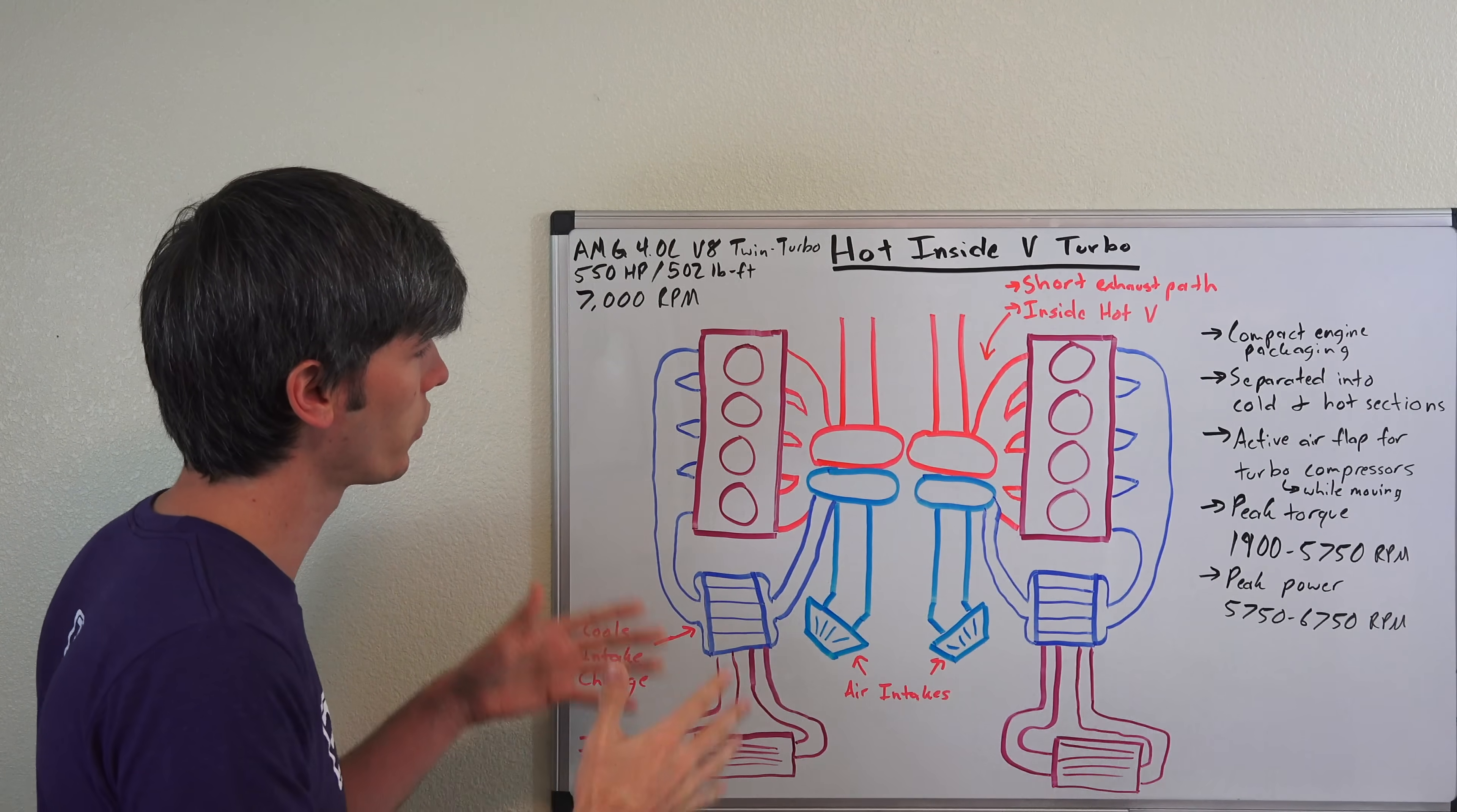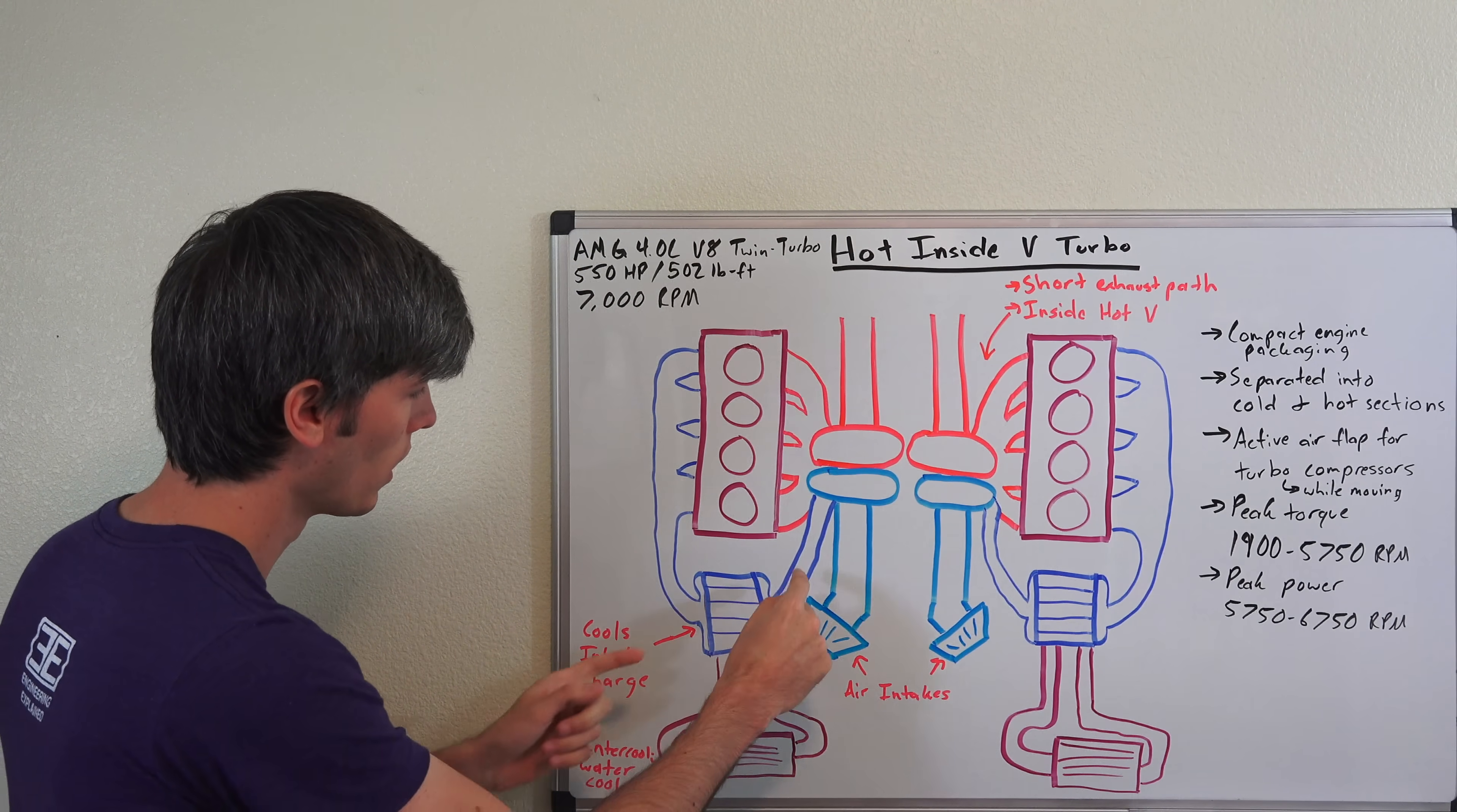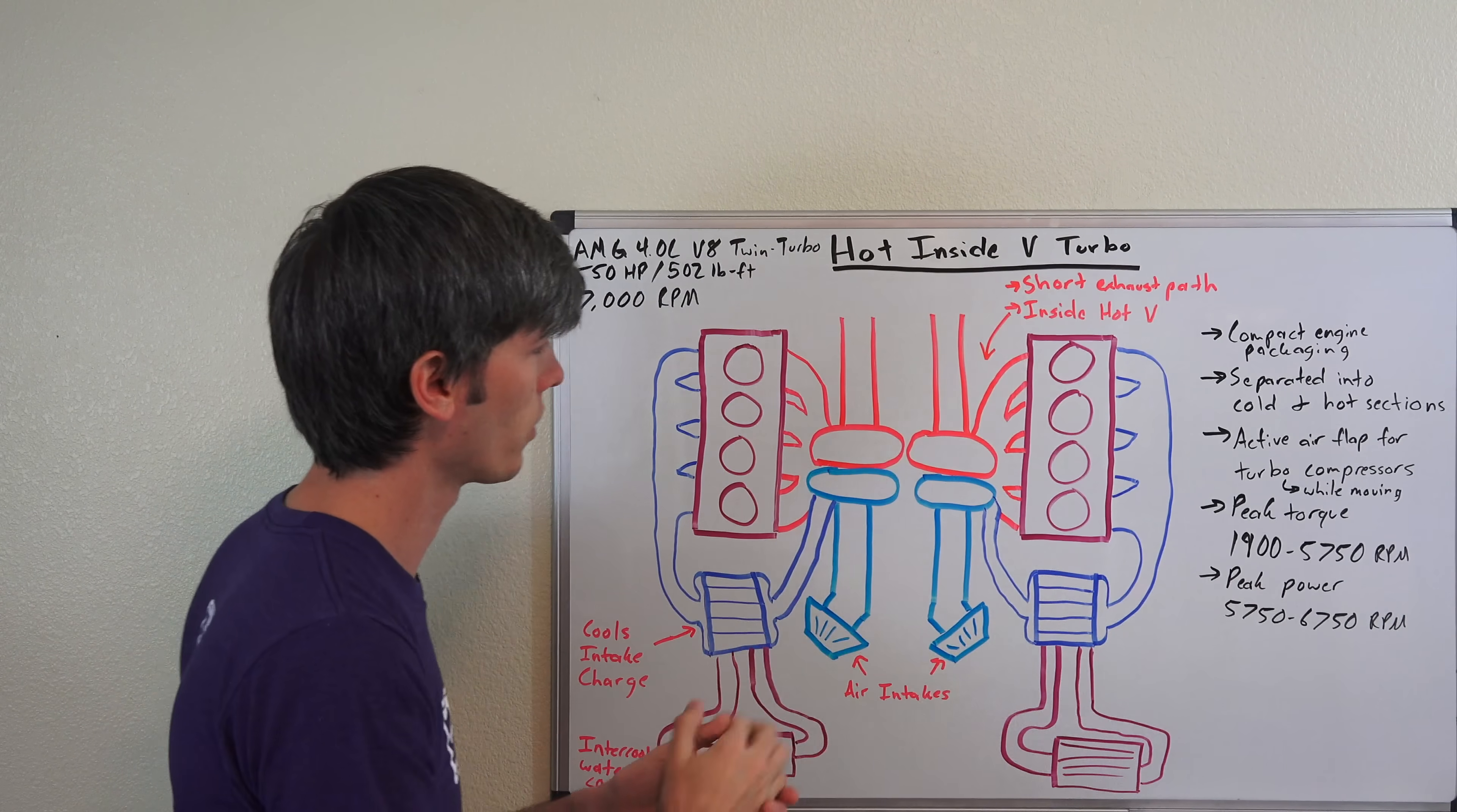Now there are numerous advantages of a setup like this. First let's walk through how it works and then talk about those advantages. Your air is going to come in through the intakes, pass through the compressor portion of the turbocharger. From there it goes to an air-to-water intercooler where water which is cooled by the front of the vehicle has a separate circuit which circulates for this intercooler. You pass that air through, cool it down, and then pass it into the engine. After it travels through the engine, it goes through the exhaust portion of the turbocharger and then out your exhaust.